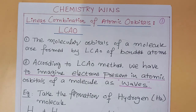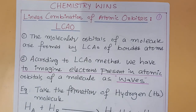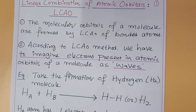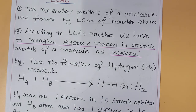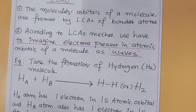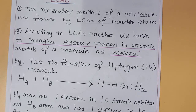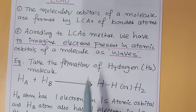The LCAO methodology explains the formation of molecular orbitals. The first point in LCAO: the molecular orbitals of a molecule are formed by LCAO of bonded atoms. According to LCAO, we have to imagine the electron as a wave.